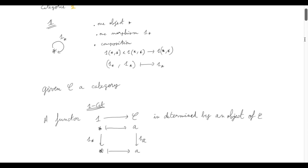That is, we have an isomorphism — a set isomorphism, a bijection — between the objects of C and the set of functors from 1 to C.